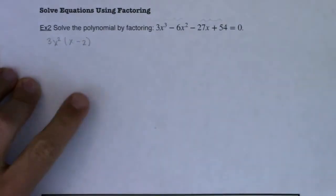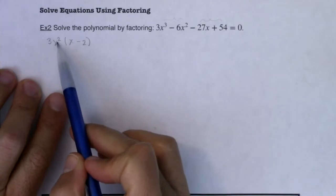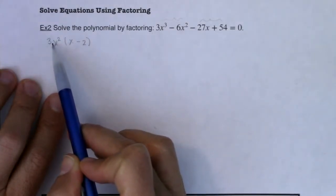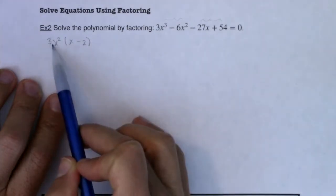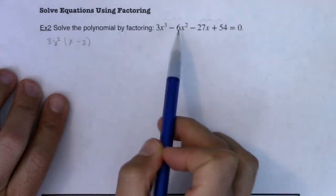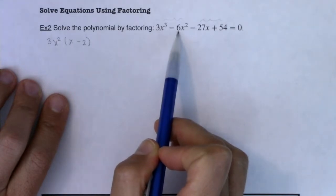And if you weren't sure, if you're like oh no am I correct, you can always distribute back and see if you get to where you started. What is 3x squared times x? Well it's 3x cubed. What is 3x squared times negative 2? It's minus 6x squared. Okay great.